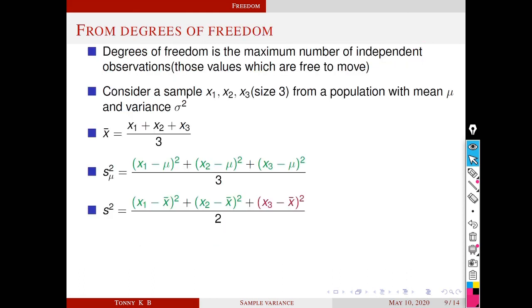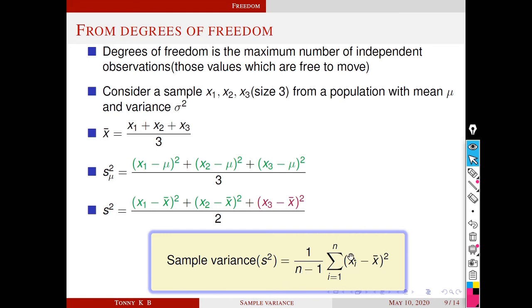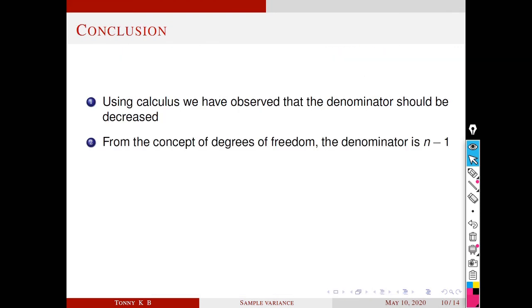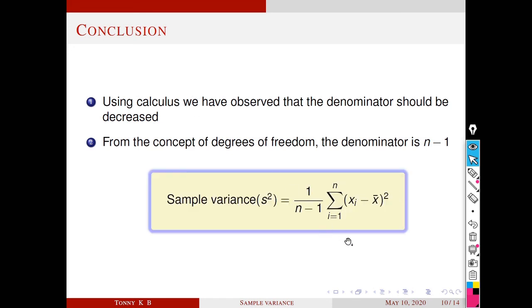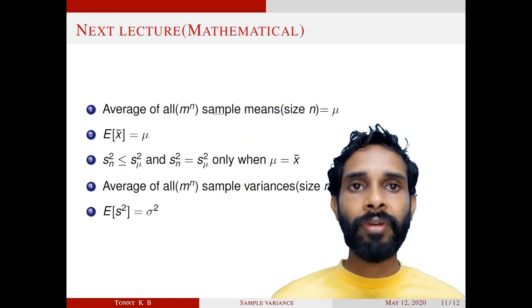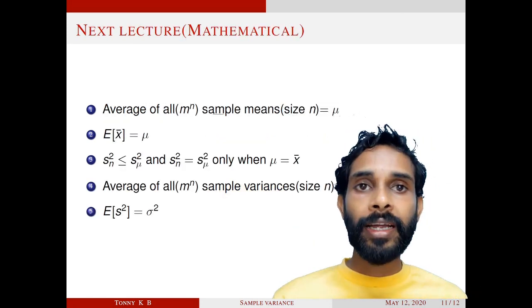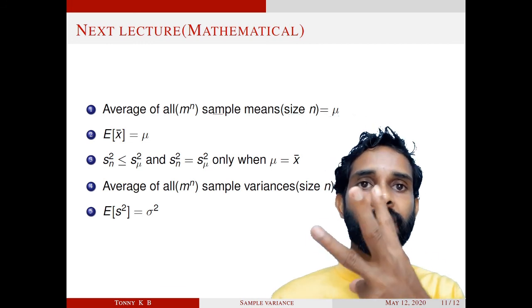Thus, using the concept of degrees of freedom, we define sample variance s square as 1 by n minus 1, sigma i equals 1 to n, xi minus x bar, whole square. From the above discussions, we get two observations: the denominator should be decreased, and the denominator is n minus 1. The interesting thing is that both observations point in the same direction. These are two good reasons to define sample variance with n minus 1. Still, the question remains: is it a good estimate of sigma square? That will be mathematically verified in the next lecture, where we will verify observations 1 and 4 by examples and provide mathematical proofs of observations 2, 3, and 5.